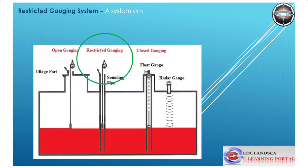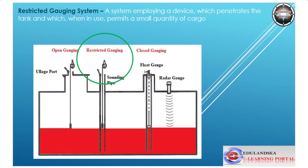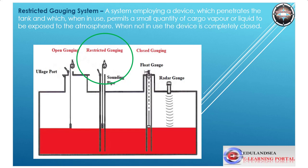Restricted gauging system: a system employing a device which penetrates the tank and which, when in use, permits a small quantity of cargo vapor or liquid to be exposed to the atmosphere. When not in use, the device is completely closed.